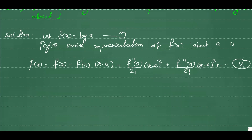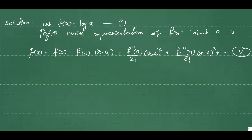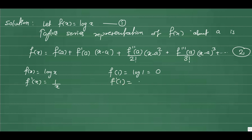Now we have to find the values of f(a), f'(a), f''(a), and so on. We will make a table. f(x) = log(x), and we will find its value at 1. So f(1) = log(1) = 0. Then f'(x) = 1/x, therefore f'(1) = 1.